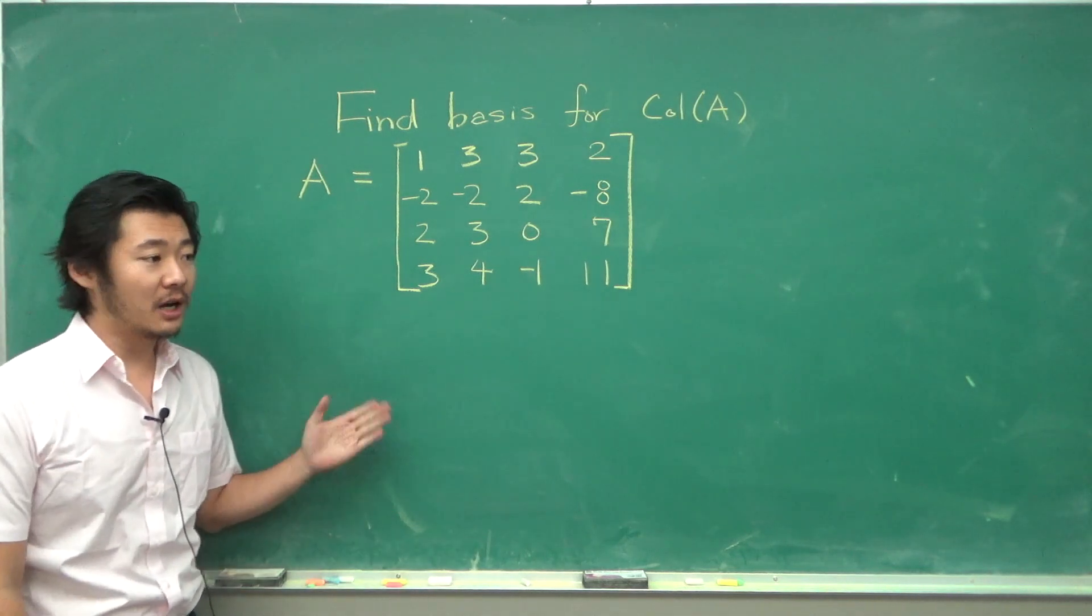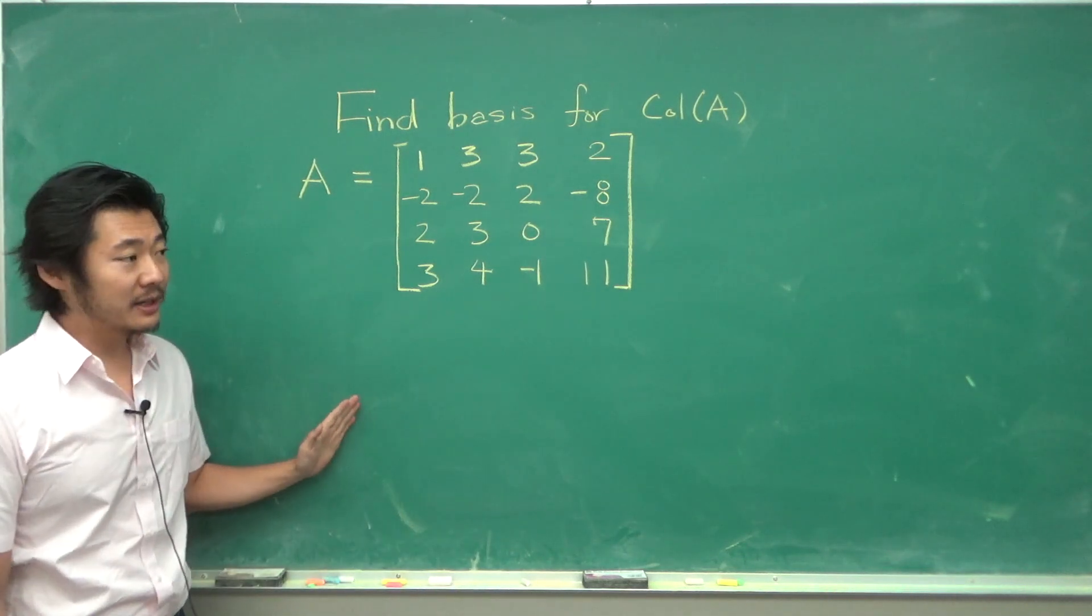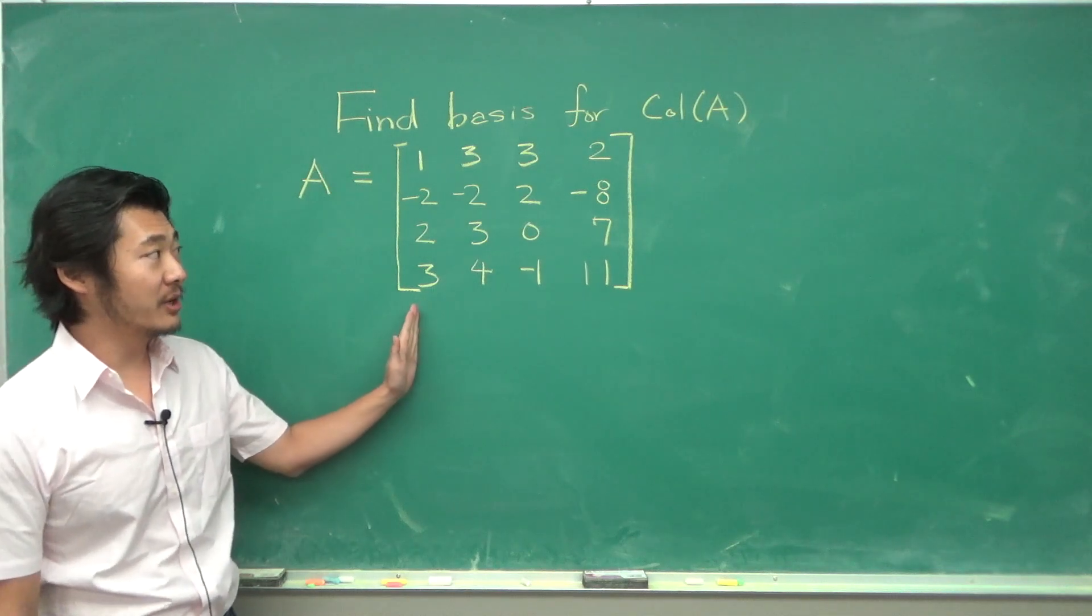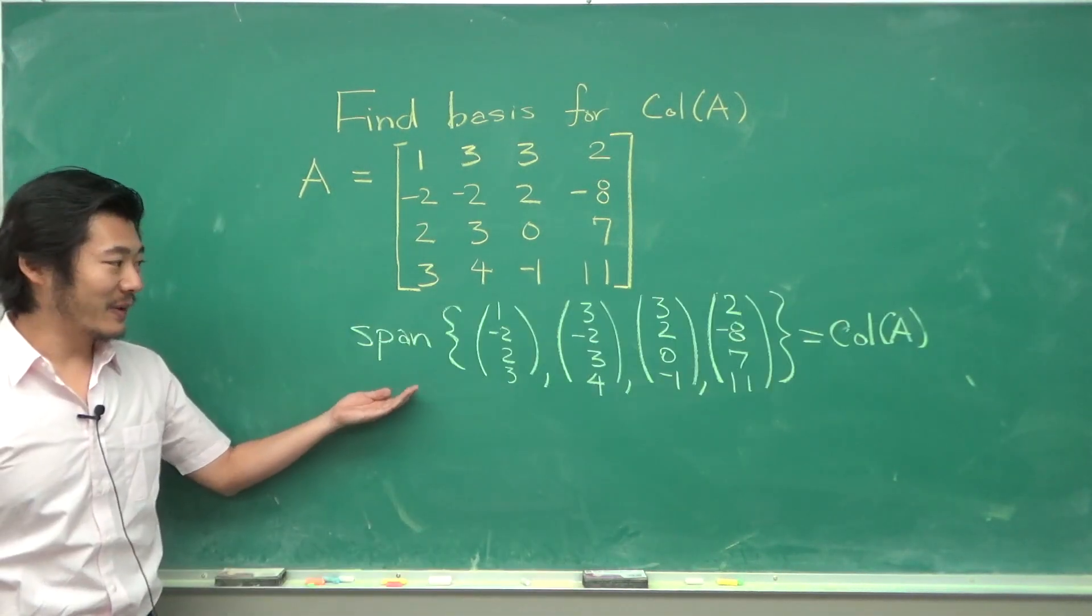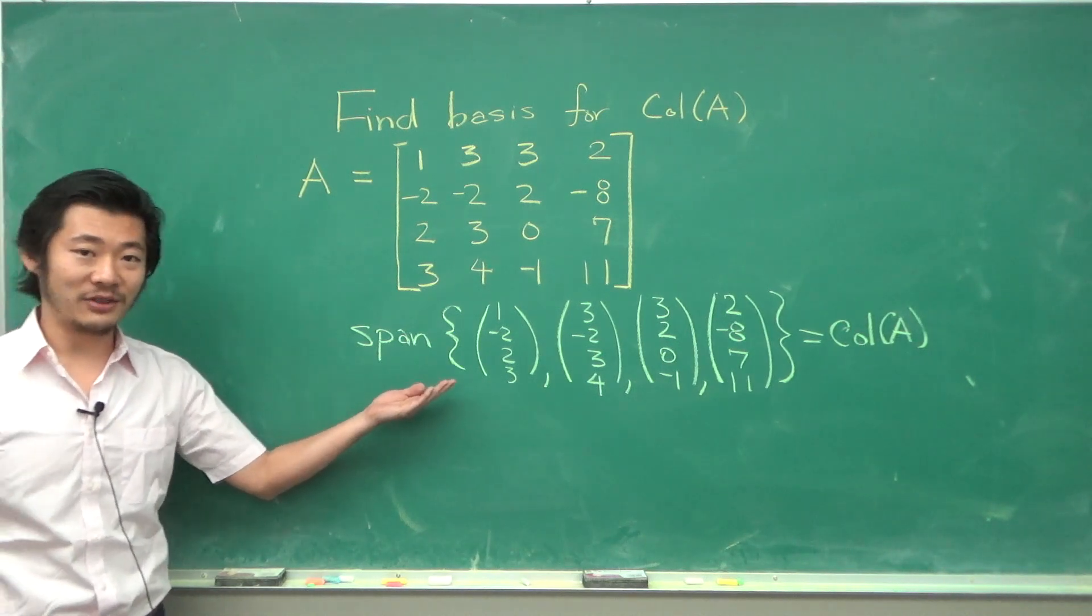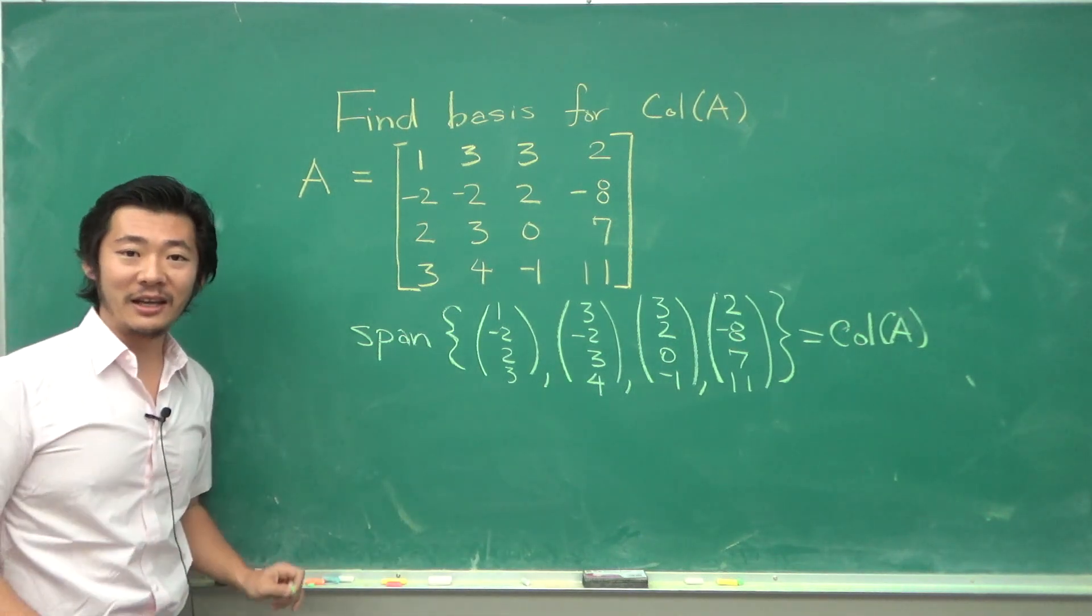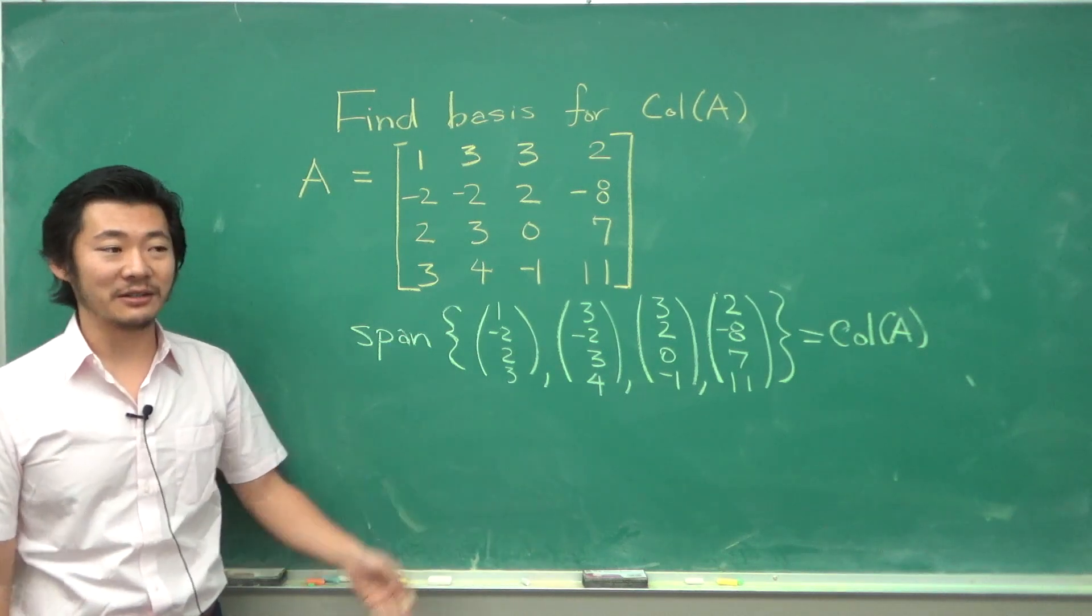So first what was the column space? It was the subspace that consists of all linear combinations of the columns of A. So it is the span of the columns of A by definition, because the span is a set of all linear combinations of these given vectors.